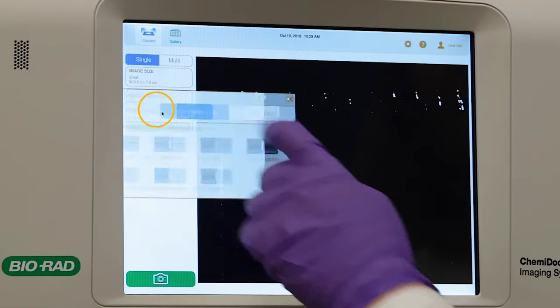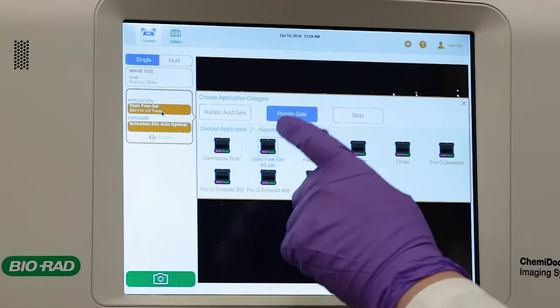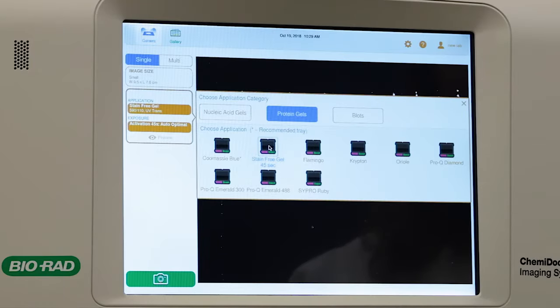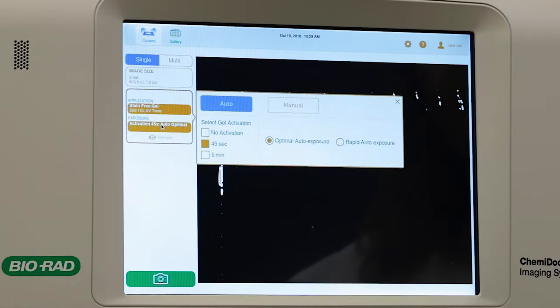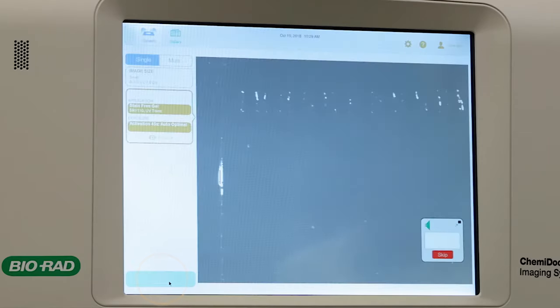Select stain-free gel as your application. Then, under exposure, select a gel activation time of 45 seconds for blotting or use 5 minutes for increased sensitivity, which can be helpful if the stain gel is the final product. Tap the camera button and capture the image.